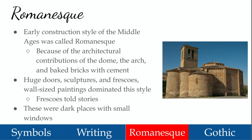The most notable change in the art of the Middle Ages was in architecture, and not surprisingly, in the construction of churches. In the early days of the Middle Ages, the Romanesque style was used on most churches. They were called Romanesque churches because they were built with three contributions that the Romans made to architecture: the arch, the dome, and baked bricks with the use of cement. This style featured huge doors with sculptures and frescoes, or wall-sized paintings, objects in gold and silver, and textiles — all used to explain the stories of the Bible and spread the faith.